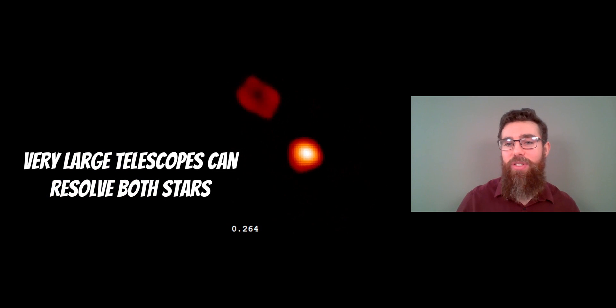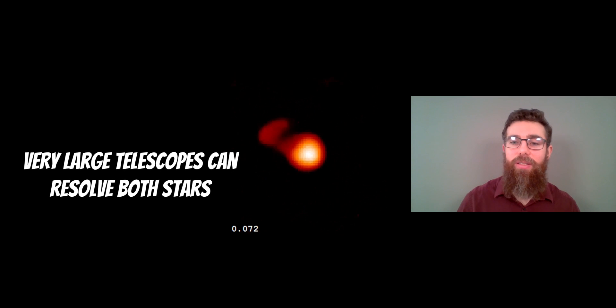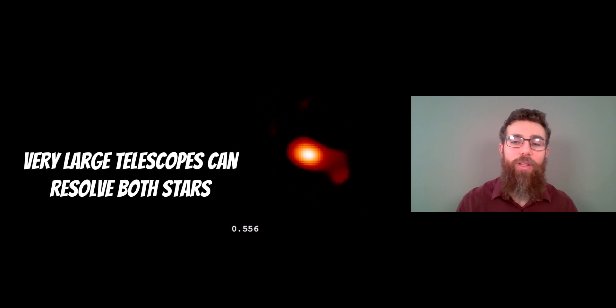Now, there are exceptions to that. If you've got very large telescopes and this particular system, which is Algol, you can just about resolve the two stars and you can see the secondary star, the smaller star, orbiting around the brighter primary.